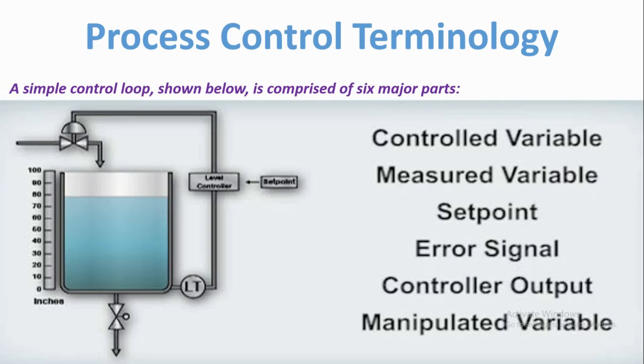A simple control loop shown below is comprised of six major parts: controlled variable, measured variable, set point, error signal, controller output, and manipulated variable.